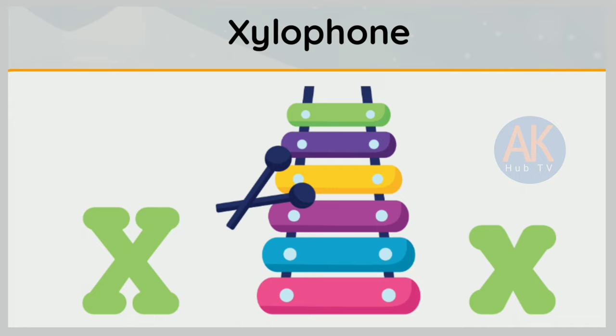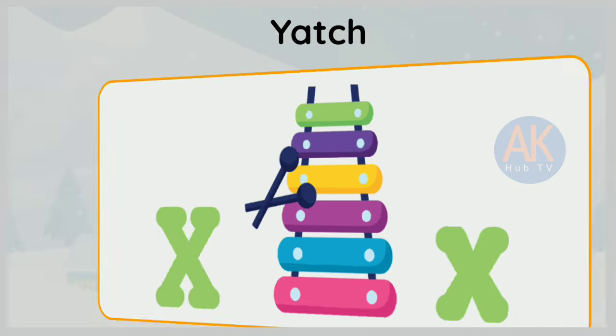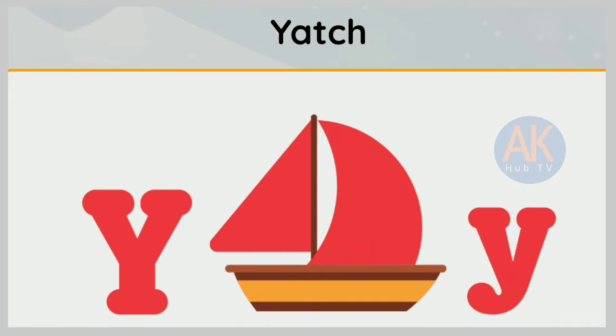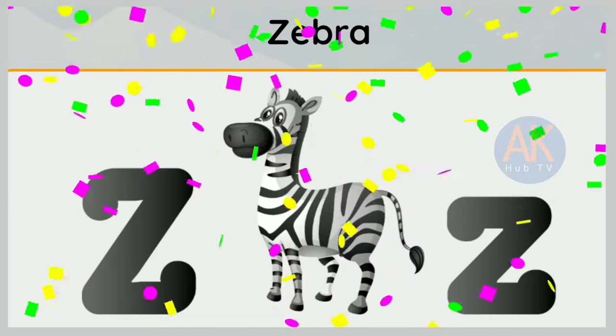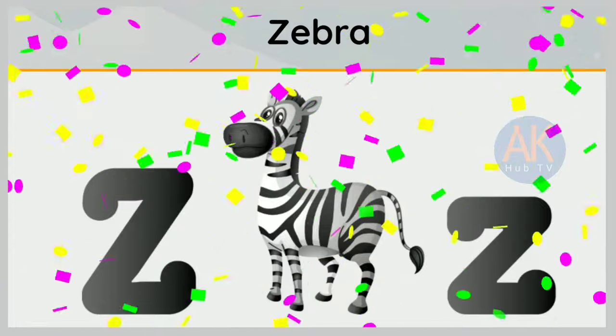X is for xylophone. X, x, xylophone. Y is for yak. Y, y, yak. Z is for zebra. Z, z, zebra.